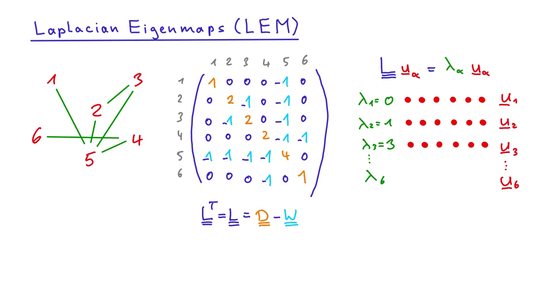It can be shown that the normalized eigenvectors solve the following optimization problem. For each eigenvector alpha, the squared difference between components of connected nodes should be small and those nodes that are connected in this graph, like 2 and 3, should be similar, while 6 and 1, for example, could be different.